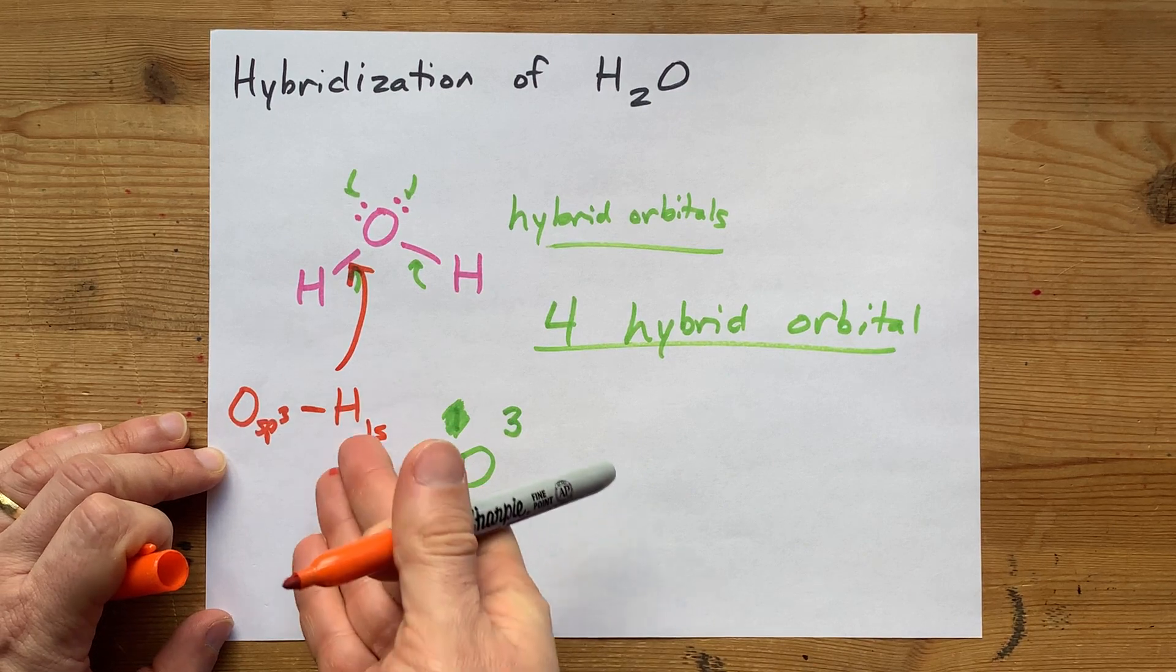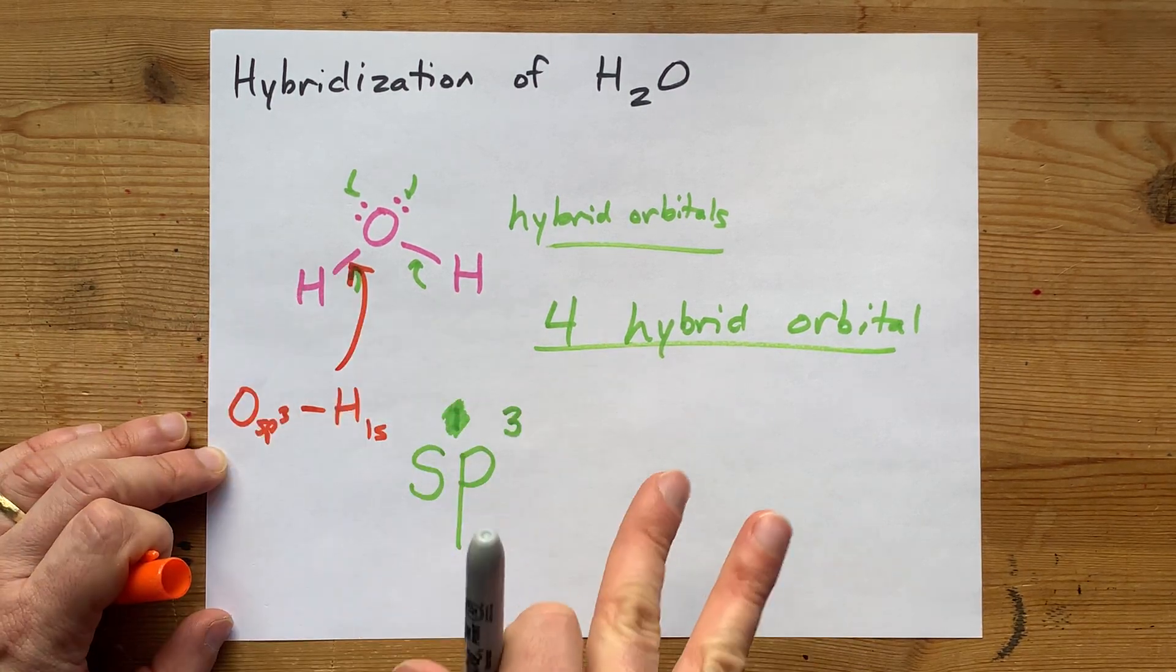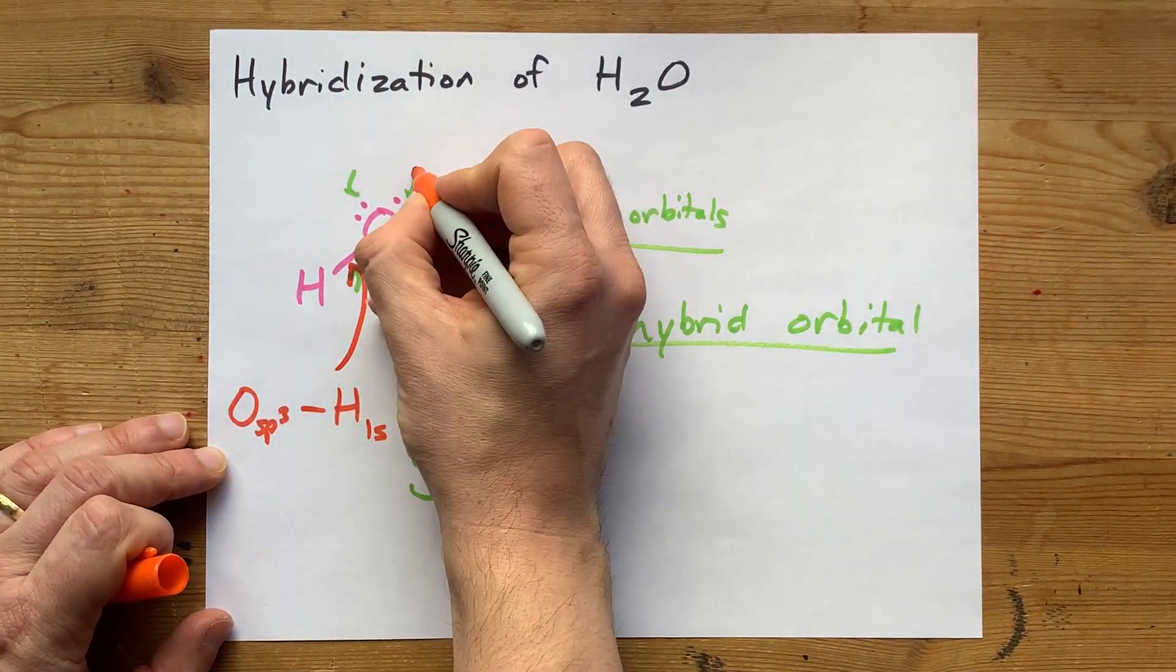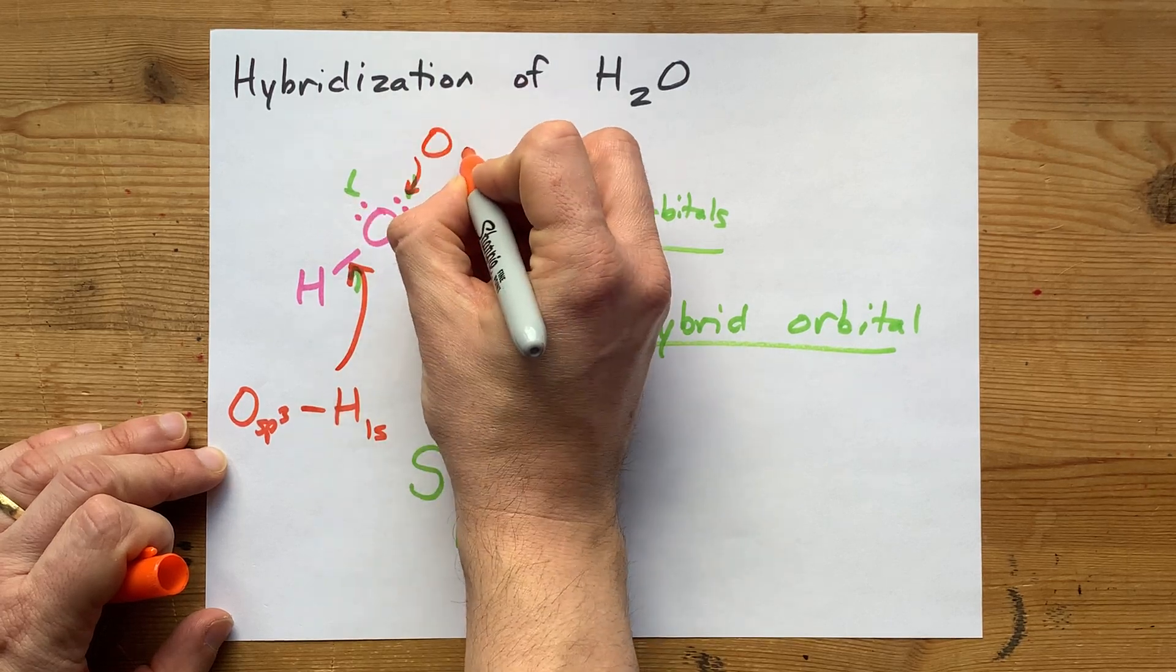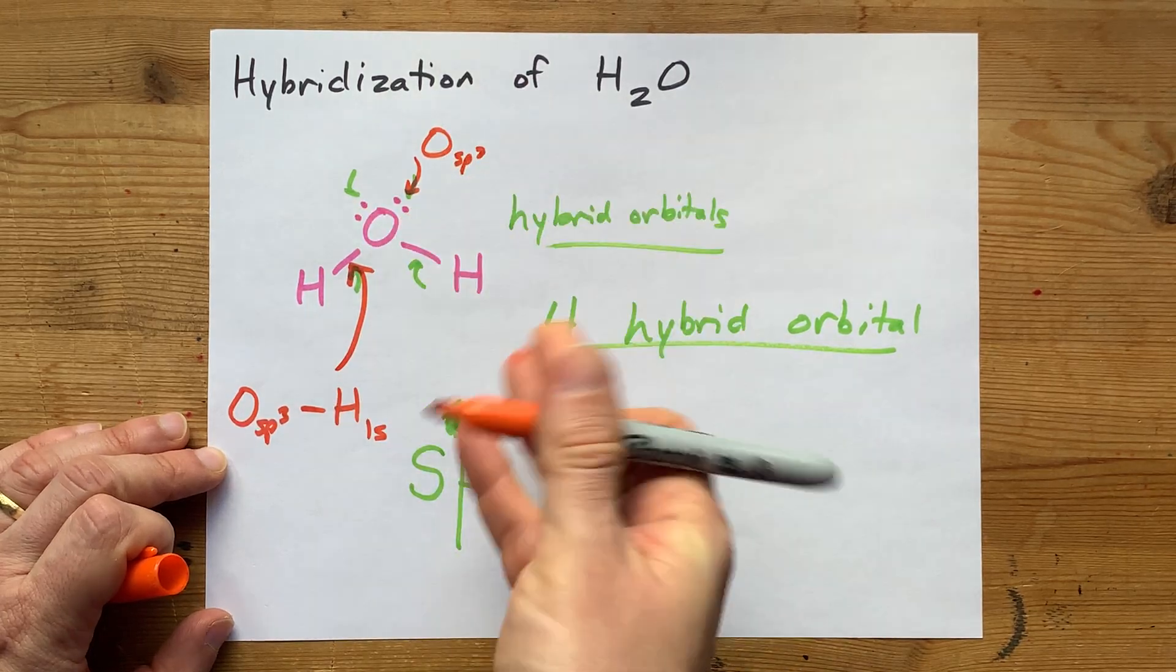Remember, hydrogen does not hybridize. It's just the 1s orbital, and that's it. These lone pairs are in oxygen's sp3 hybridized orbital.